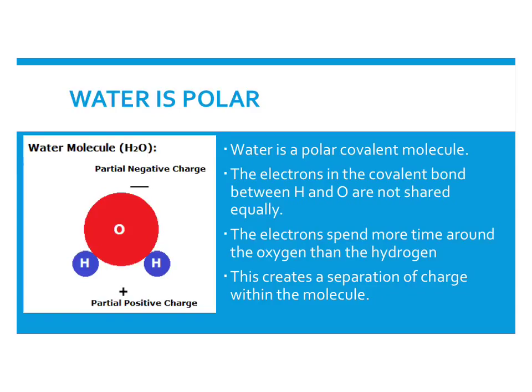Water is a polar molecule with covalent bonds, but these are polar covalent bonds in which the electrons between the hydrogen and the oxygen are not shared equally. Oxygen is an electron hog, so the electrons spend more time around the oxygen than around the hydrogen. This creates a separation of charge within the molecule. The hydrogen atoms are slightly positively charged, and the oxygen end of the molecule is slightly negatively charged due to the extra electrons there.